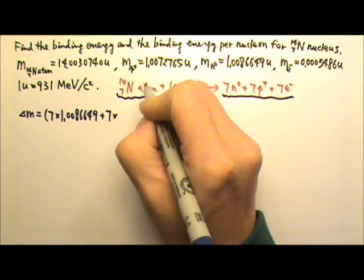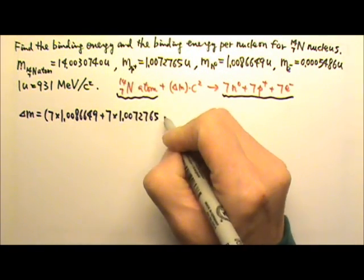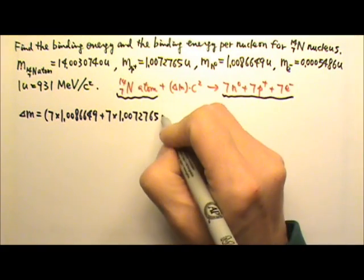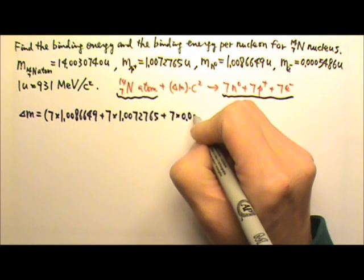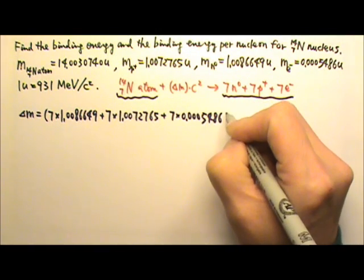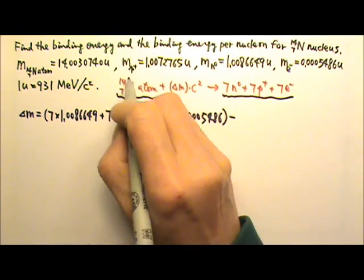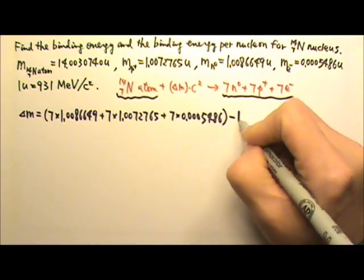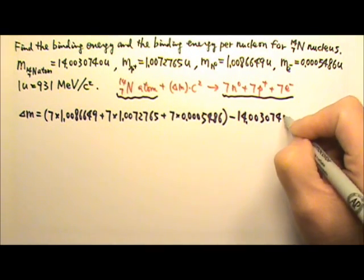Plus 7 electrons, 7 times 0.0005486, and then minus the atom's mass, which is 14.0030740.